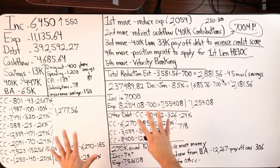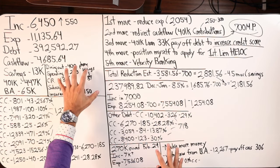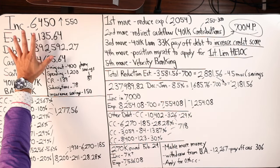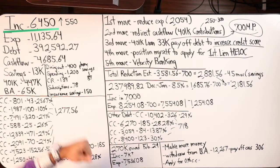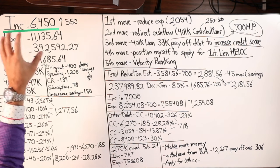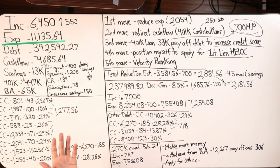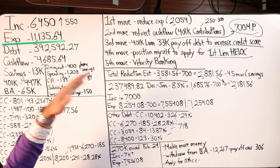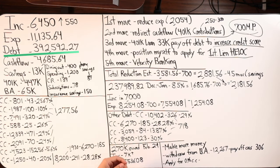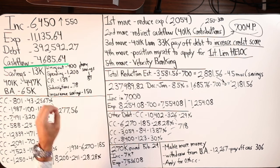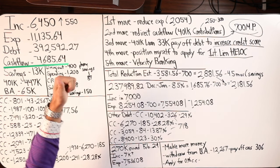You'll notice some of the things didn't move, except for right here and this area right here, and I added this. So recap on the four major numbers. We're starting off in October 2023, making $6,450. Husband and wife, that's combined income. Total expenses are $11,135.64, combination of living and debt expenses. The total debt is $392,592.27, leaves us with a negative cash flow of $4,685.64.